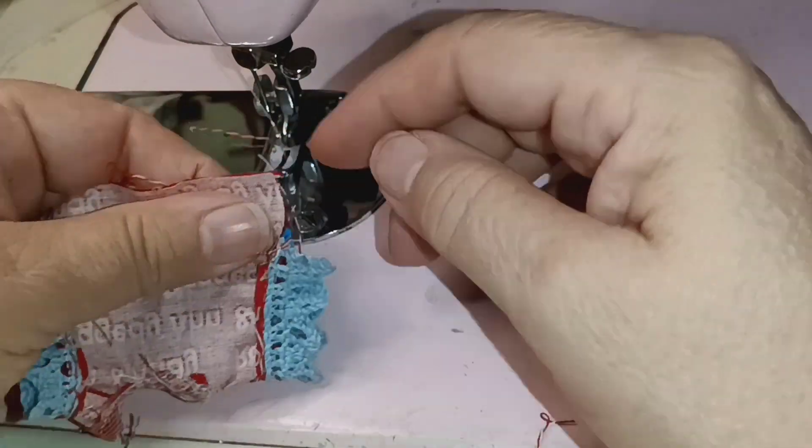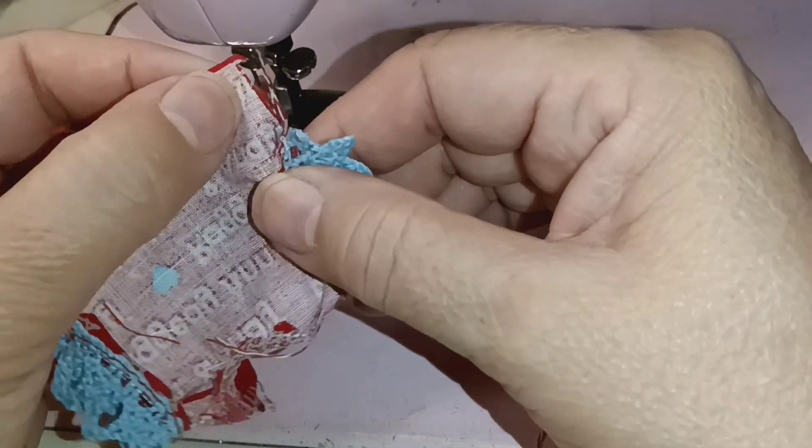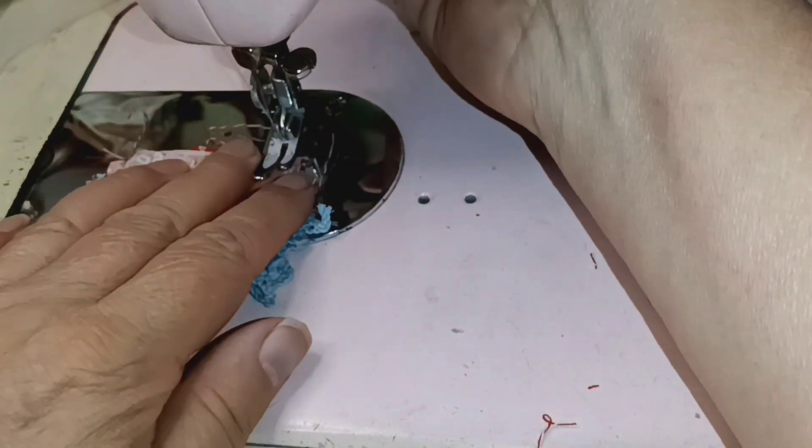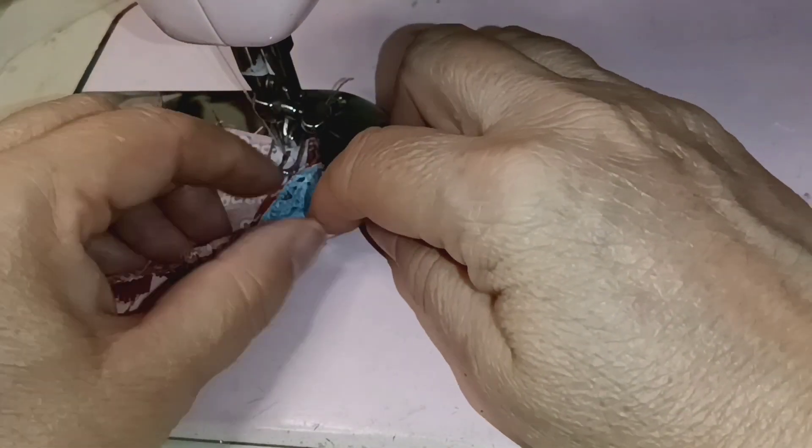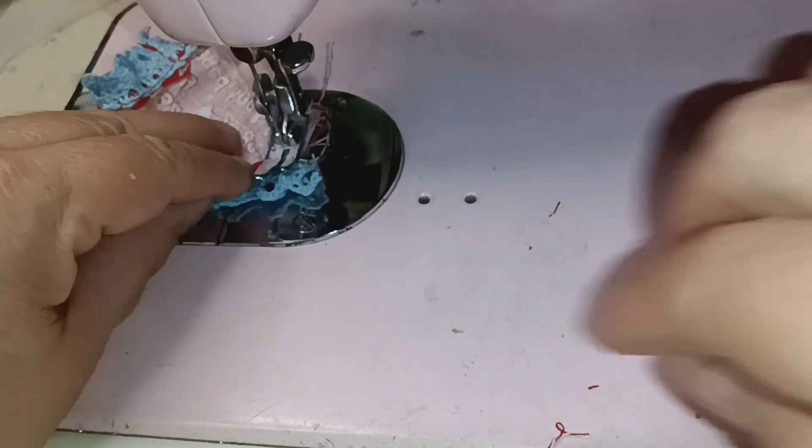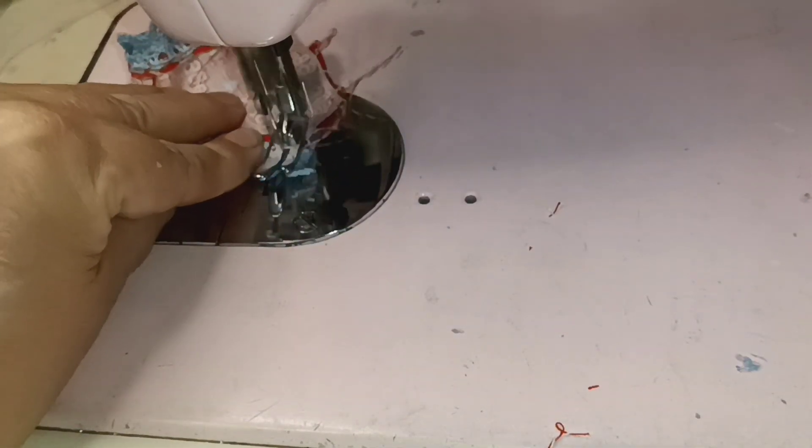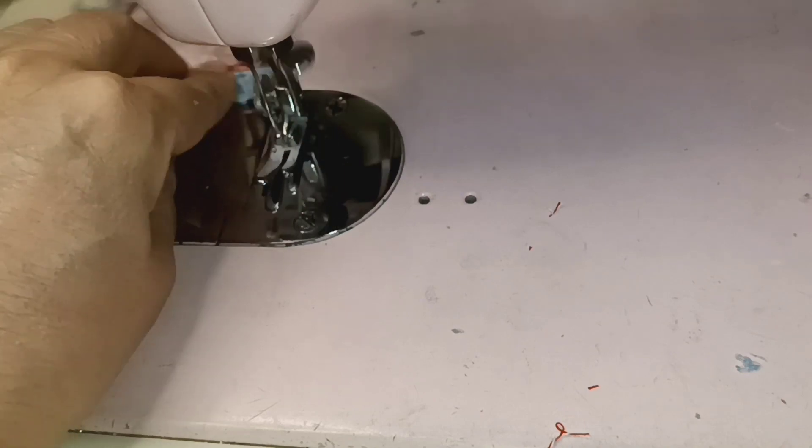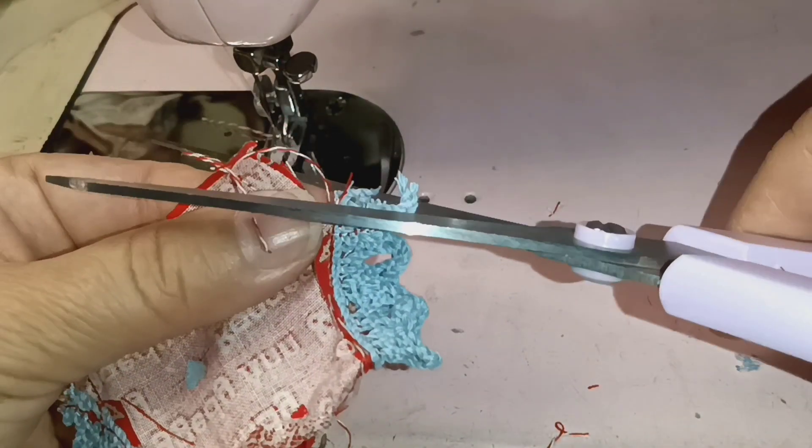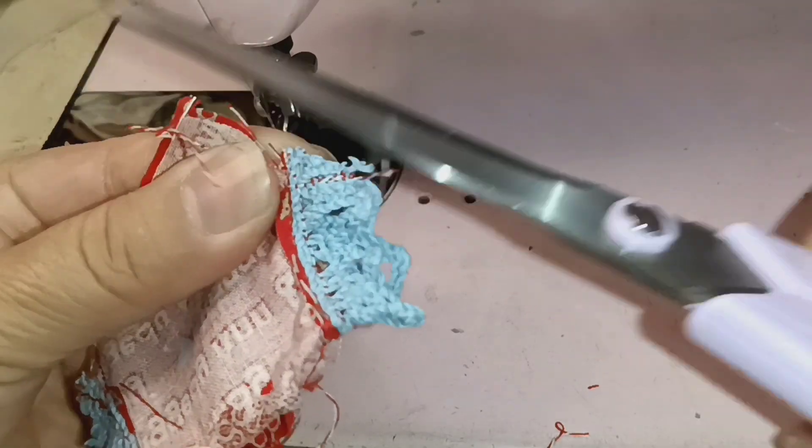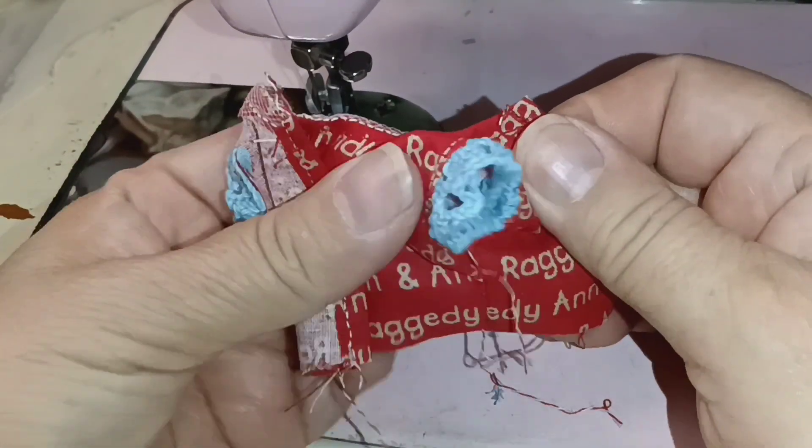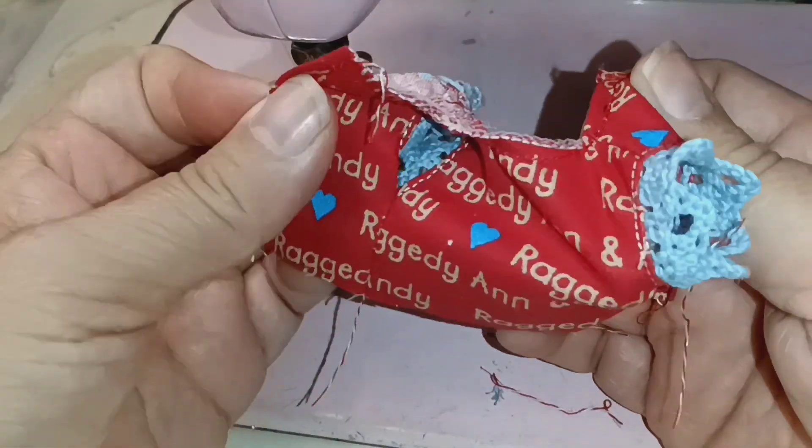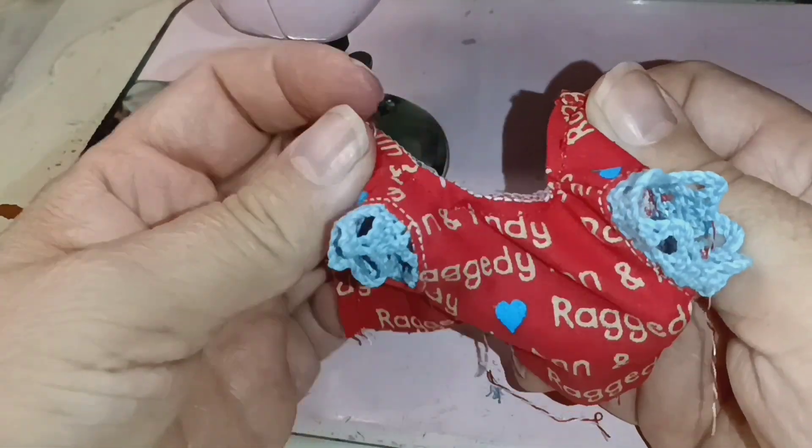I am making sure that this is straight there and do the other side. And then clip this out and we're going to turn this inside out. And there is our adorable little top for Brittany.